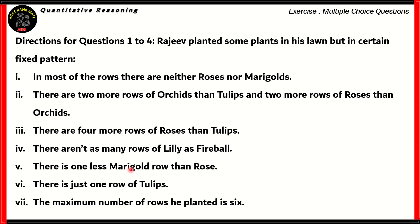Rajiv planted some plants in his lawn in a certain fixed pattern. The pattern is described like this: in most of the rows, there are neither roses nor marigolds. Number two, there are two more rows of orchids than tulips and two more rows of roses than orchids. There are four more rows of roses than tulips. There aren't as many rows of lily as fireball. There's one less marigold row than rose, and there's just one row of tulips. The maximum number of rows he planted is six.